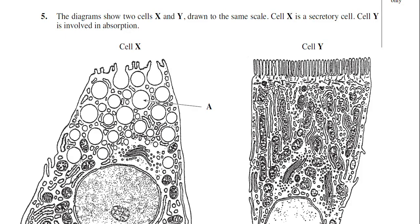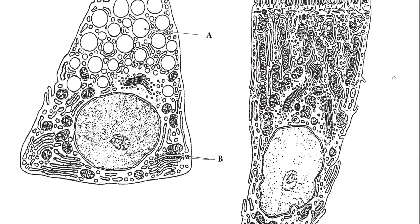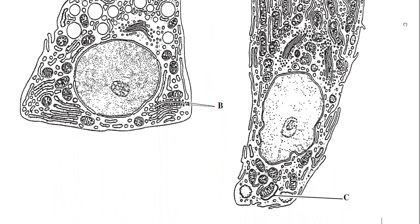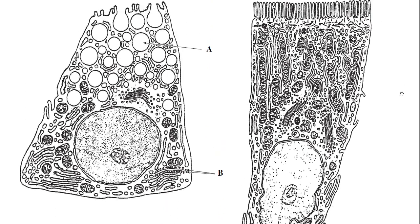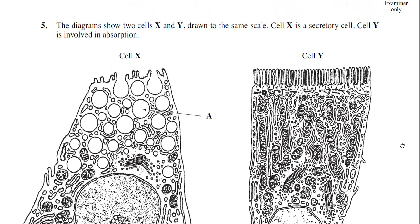This is question number 5 from the June 2010 BY-1 paper. This question is looking at these two cells which you can partially see. The diagrams show two cells X and Y drawn to the same scale. Cell X is a secretory cell and cell Y is involved in absorption. I want to highlight some things that indicate cell X is a secretory cell while cell Y is adapted for absorption.